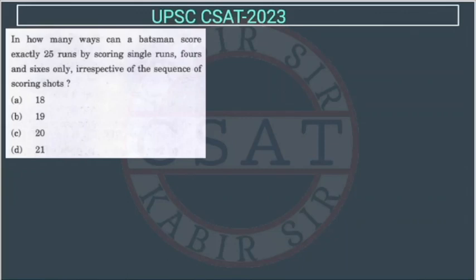Now, let's see this question. This question is from permutation and combination. In how many ways can a batsman score exactly 25 runs by scoring single runs, 4 runs or 6 runs only, irrespective of the sequence of the scoring shots?